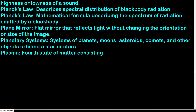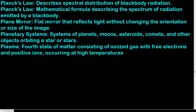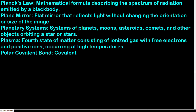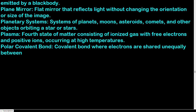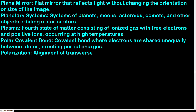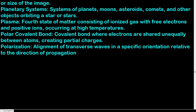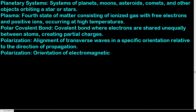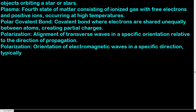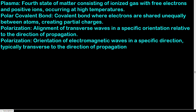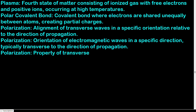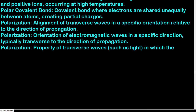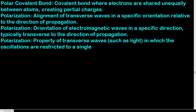Plasma: fourth state of matter consisting of ionized gas with free electrons and positive ions, occurring at high temperatures. Polar covalent bond: covalent bond where electrons are shared unequally between atoms, creating partial charges. Polarization: property of transverse waves (such as light) where the oscillations are restricted to a specific orientation relative to the direction of propagation. Polarizer: optical device that selectively transmits light waves vibrating in a particular plane and absorbs light waves vibrating in other planes.